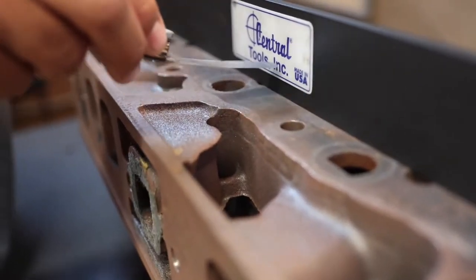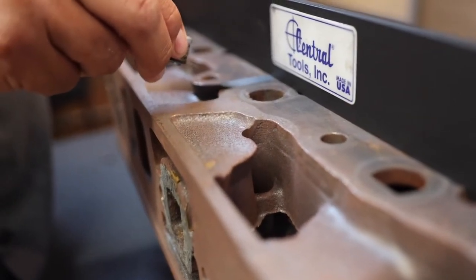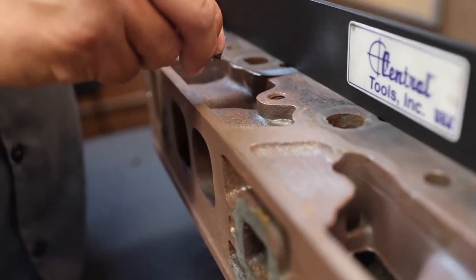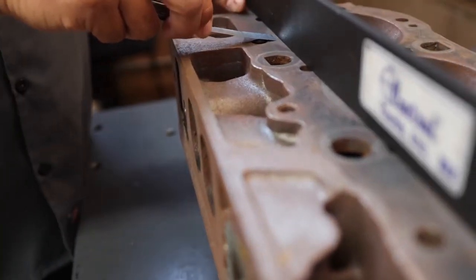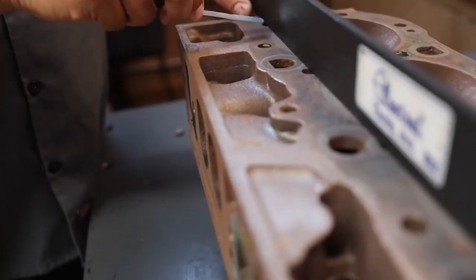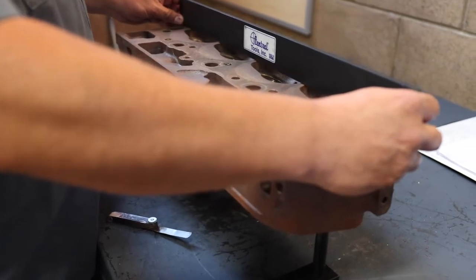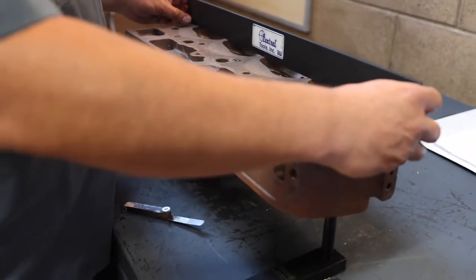I take my filler gauge, I go down the length of the straight edge. And if that blade slides through, that means that the location where it slides through is deformed on the cylinder head. So I'm going to go across the middle of the combustion chambers, and then I can check each location again.